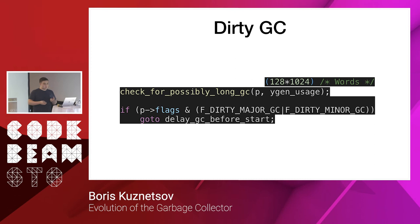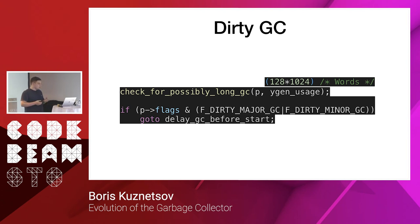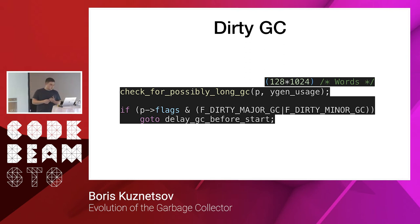When the process runs out of heap free space, it asks the garbage collector for new space. What the garbage collector does is check the size of the heap. If the heap size is large enough, it sets special flags on the process so that this process should be run by the dirty schedulers. You can also see the last line: it is 'go to delay GC before start'. What does it mean?